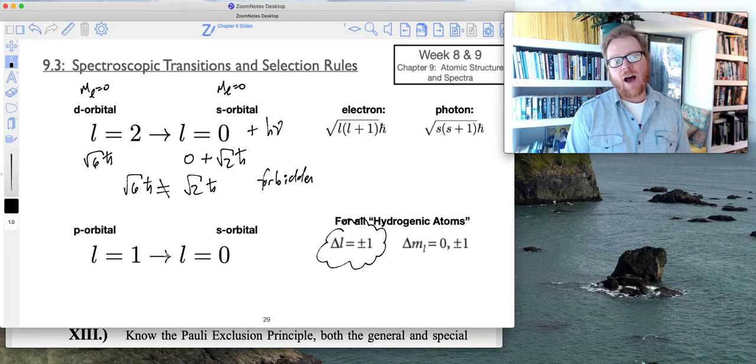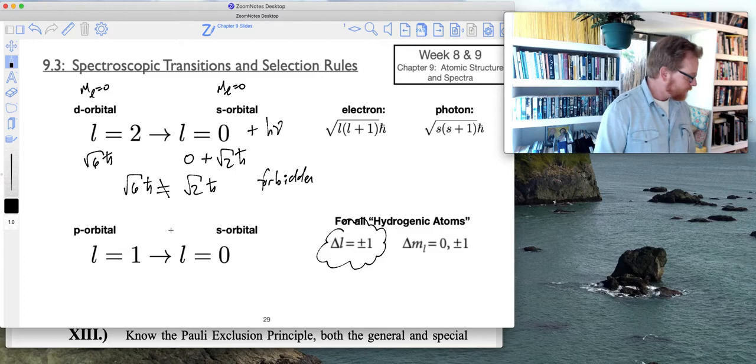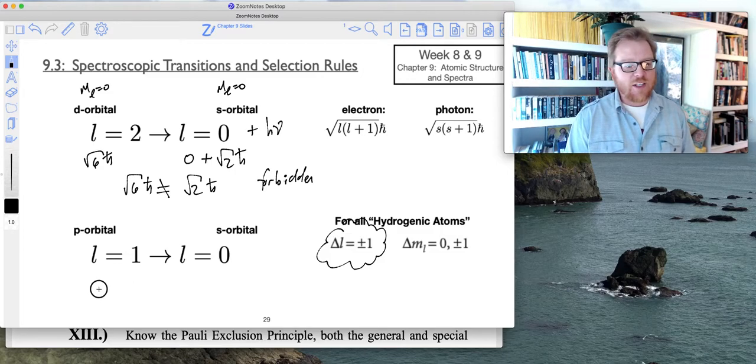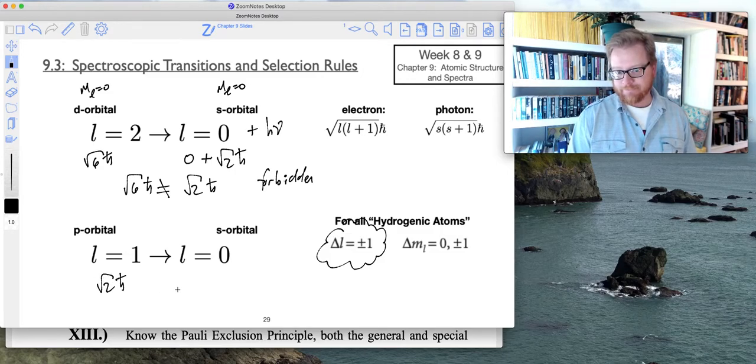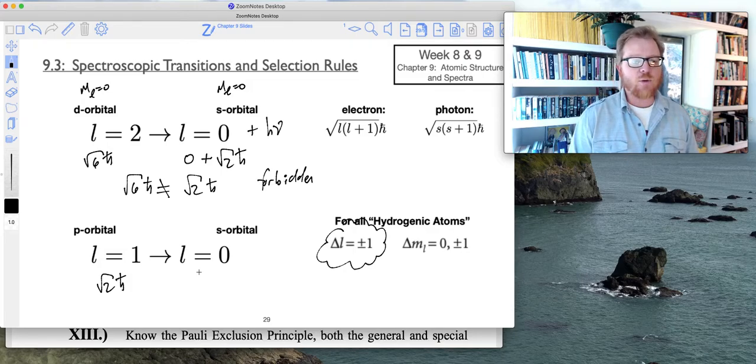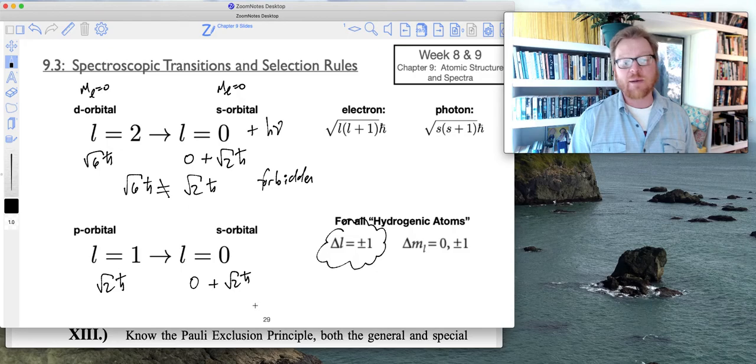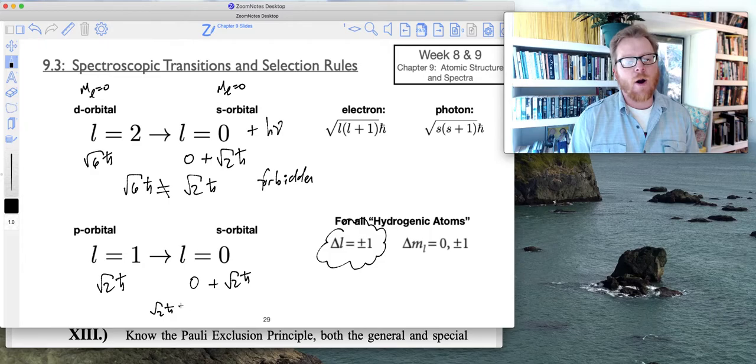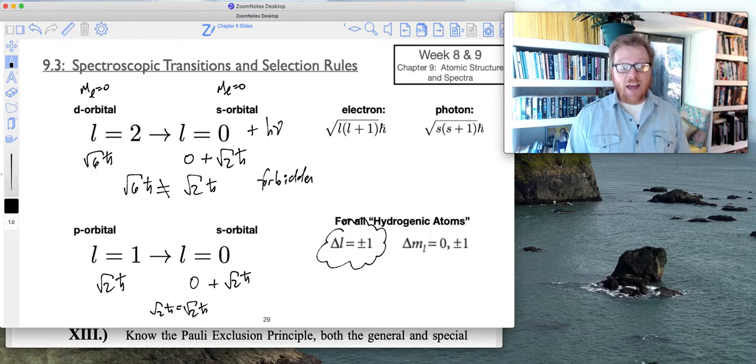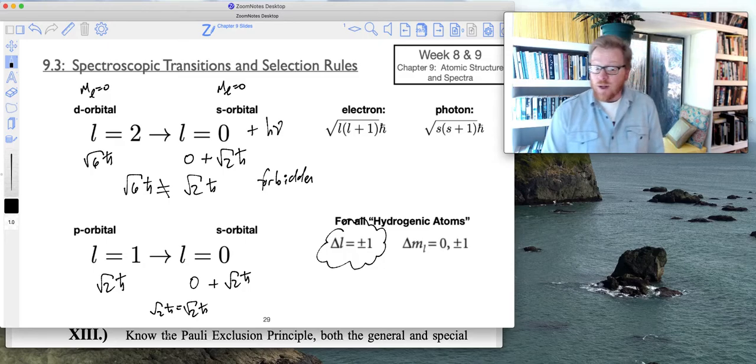What about l=1 to l=0, could I do it? Well, when l equals 1, that's √2 ℏ. When l equals 0, we know that's 0. However, a photon is getting emitted as a result, so there's √2 ℏ angular momentum leaving from the photon. So √2 ℏ equals √2 ℏ, and thus we can go from l equals 1 to l equals 0.